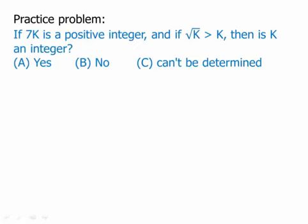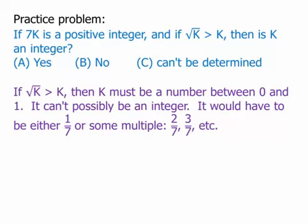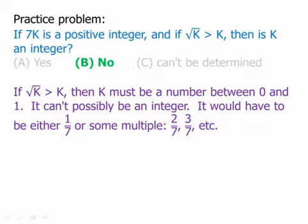Here's a practice problem: if 7k is a positive integer and the square root of k is greater than k, then is k an integer? The square root of k being greater than k only happens when k is between 0 and 1. So k must be a number between 0 and 1 — it can't possibly be an integer. It would have to be something like 1 seventh, 2 sevenths, 3 sevenths, and so on. So we definitely know k is not an integer, and the answer is a clear no.